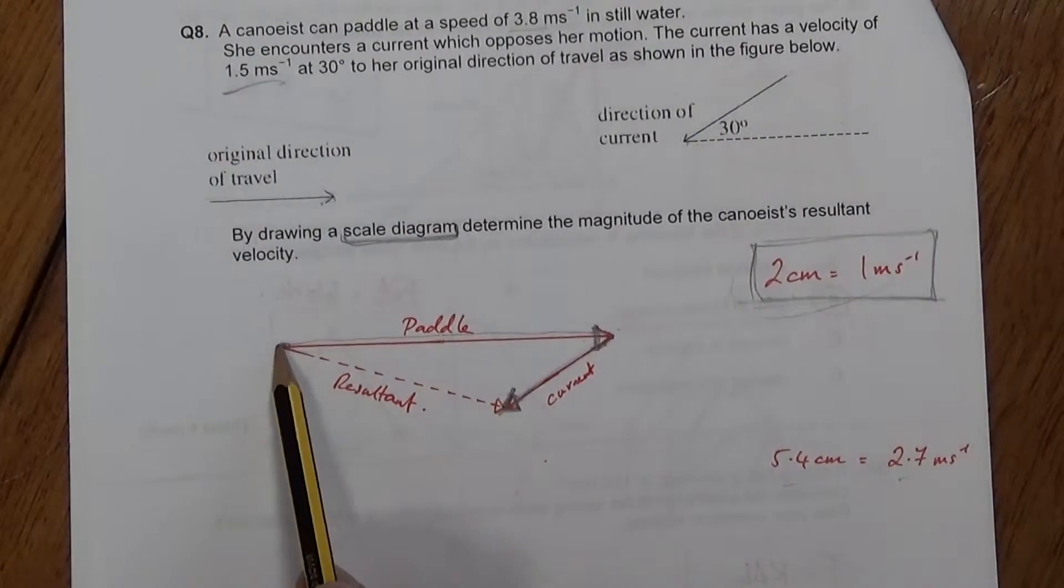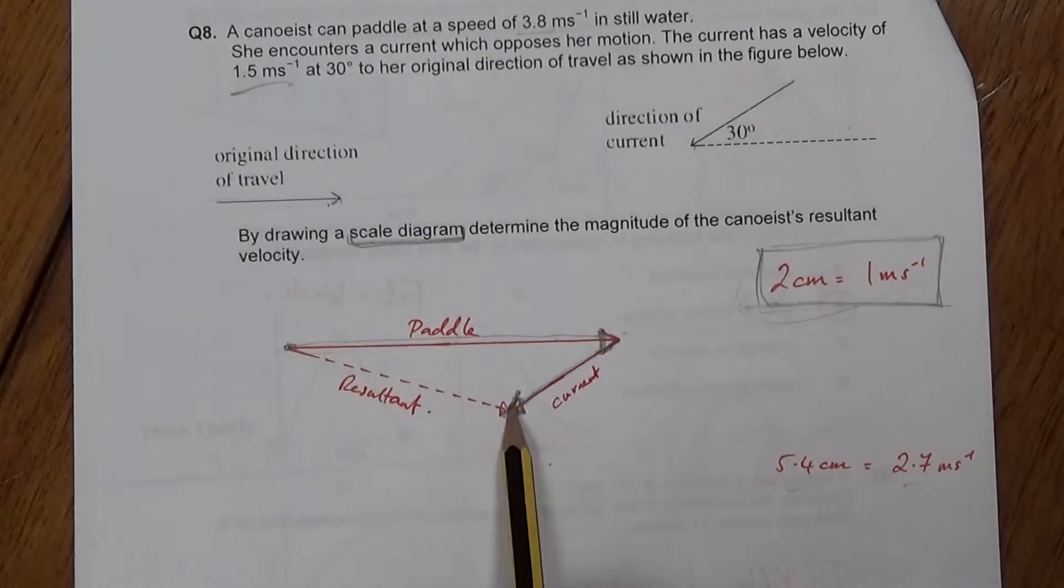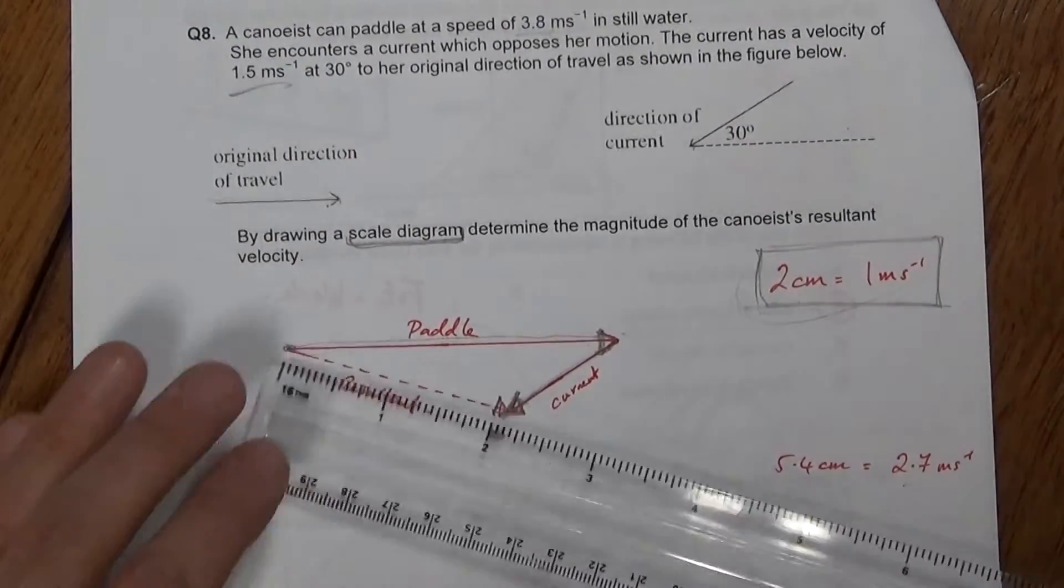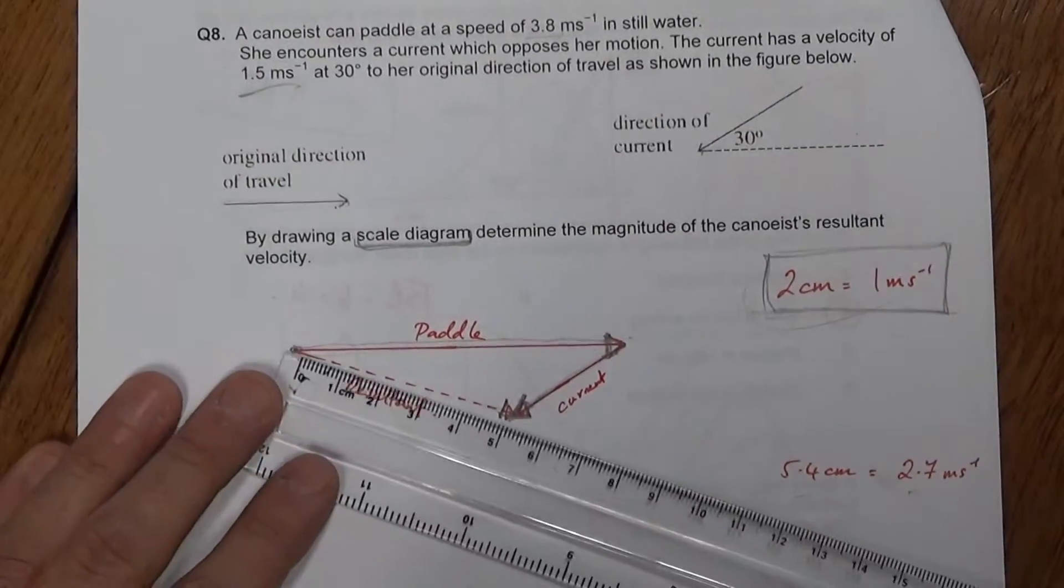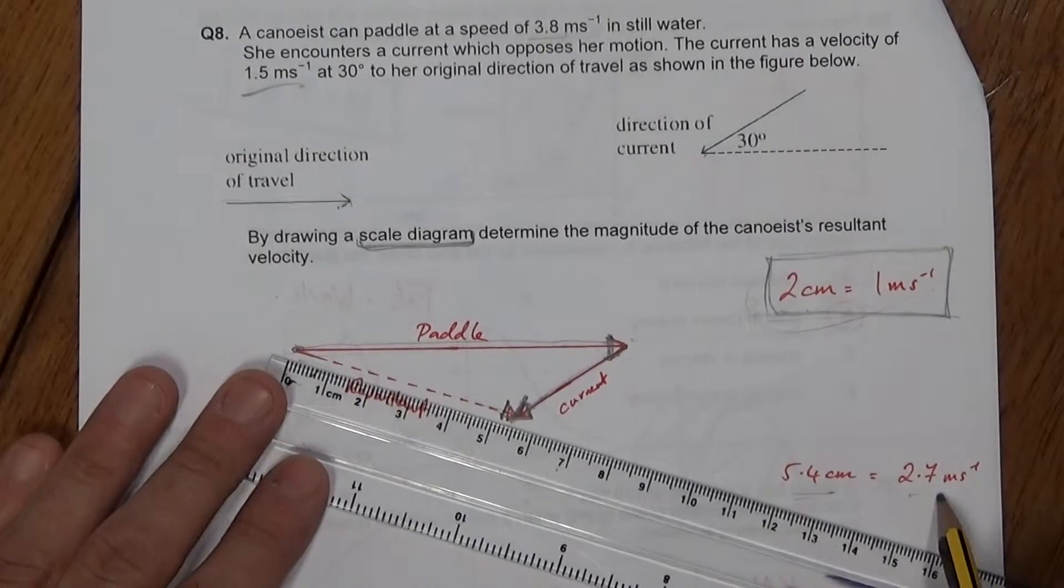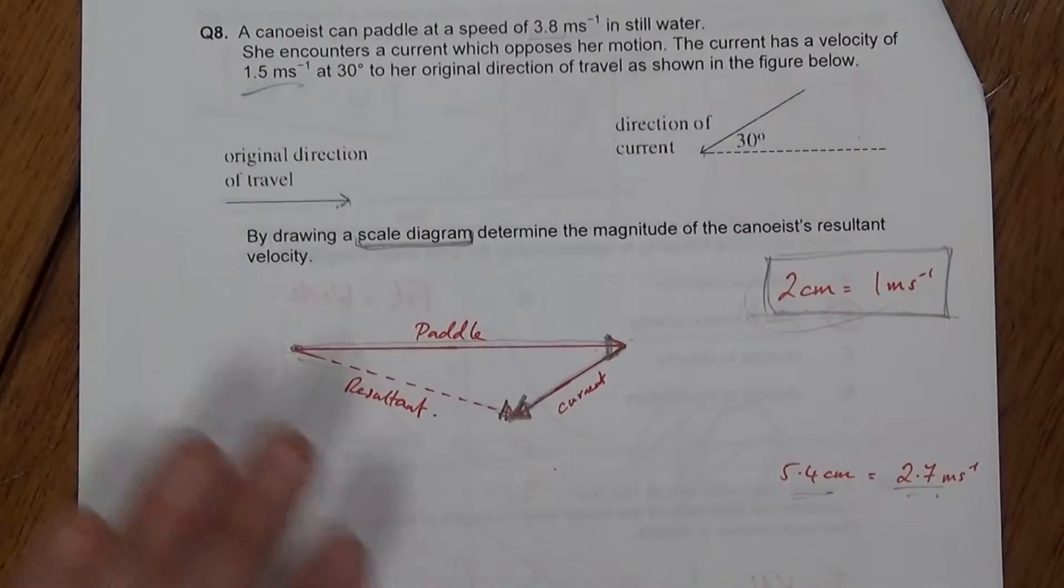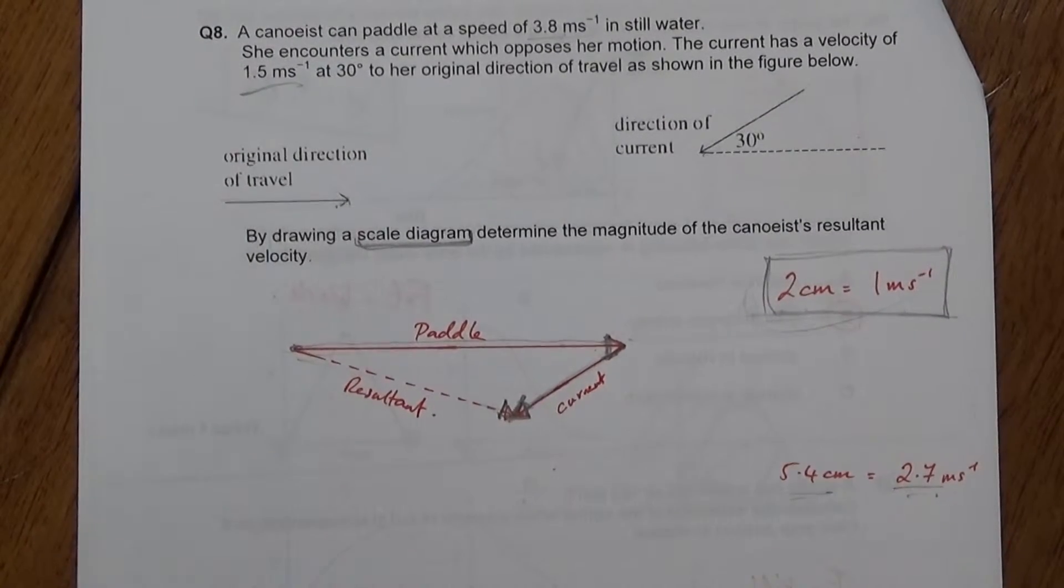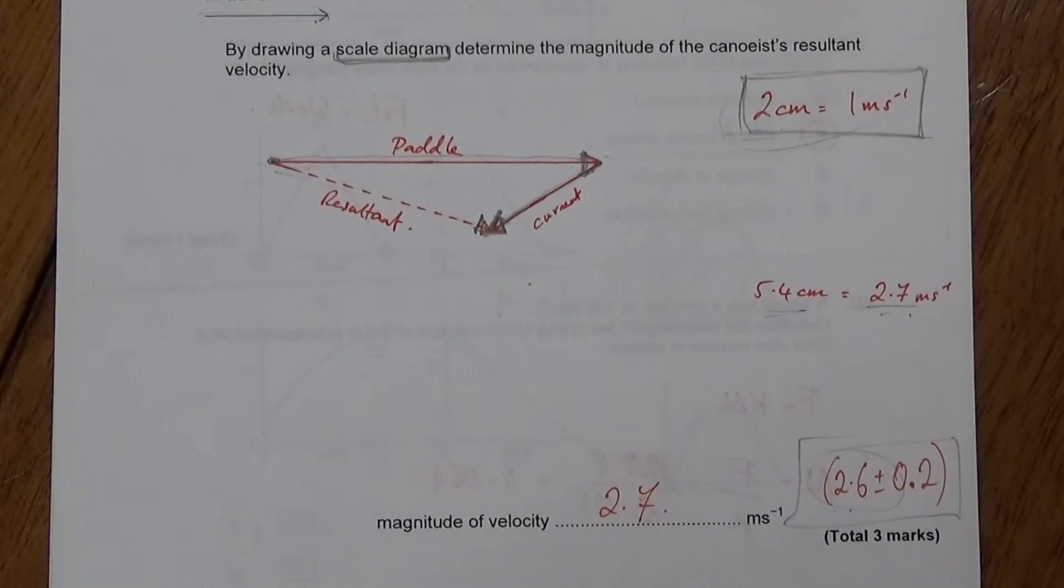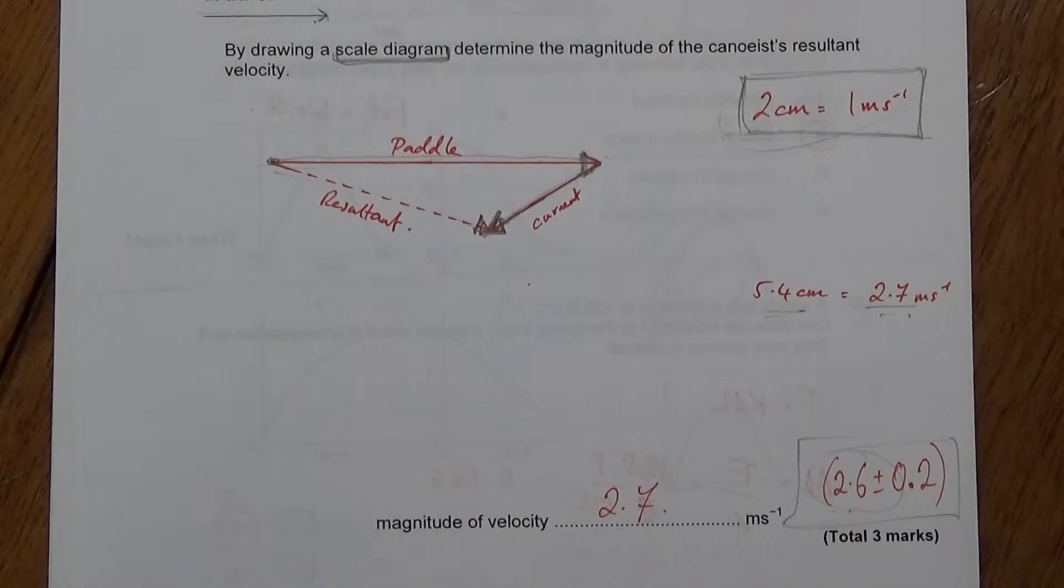What is the result? Well, you basically started there and you ended up there. So this is the resultant along here with this arrow. There's an arrowhead going that way. So I measure how long that is. In my case, it came out to 5.4 centimeters, which I divide by two to get 2.7. The mark scheme says, if you do it properly, it comes out to 2.6 plus or minus 0.2. So I would be within this tolerance there. All good.